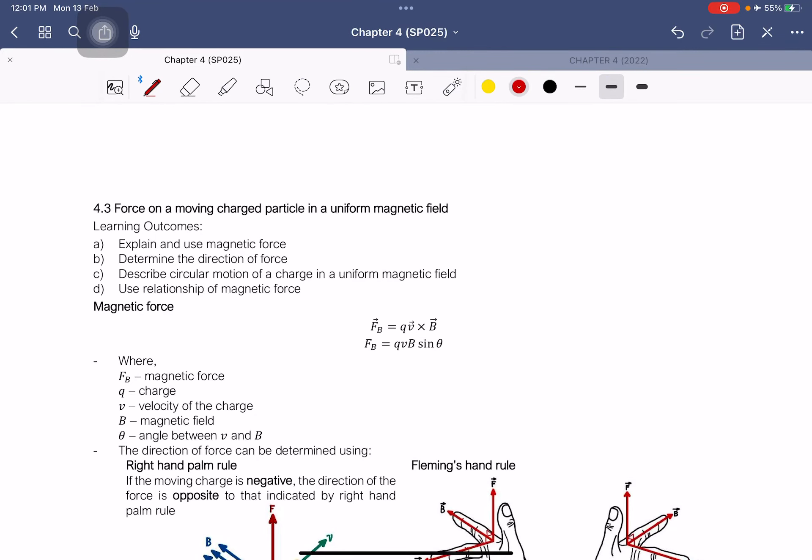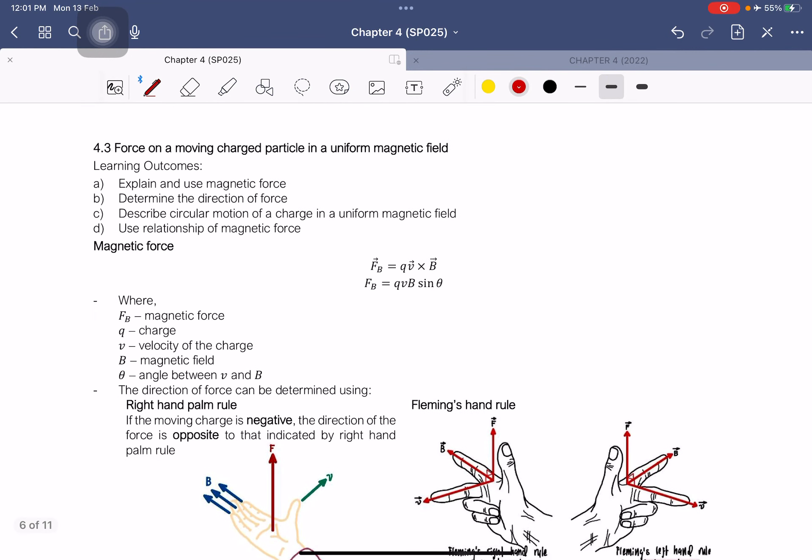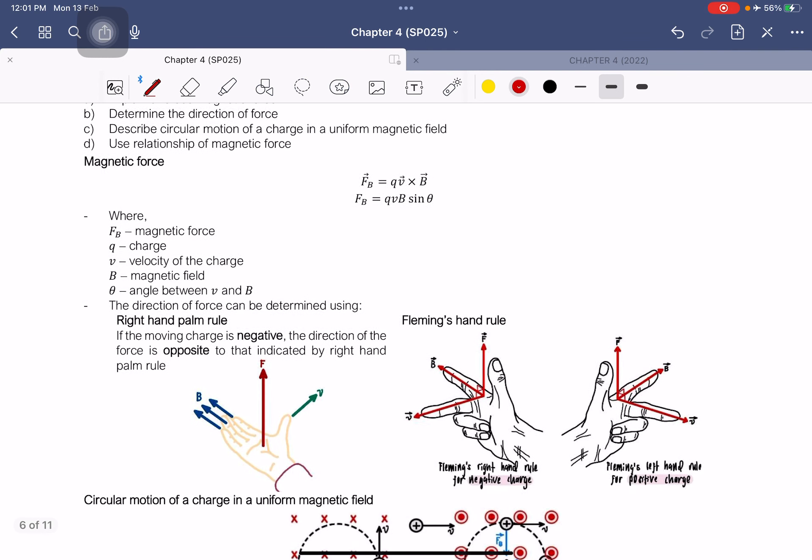Subtopic number 3 is on force on a moving charged particle in a uniform magnetic field. For this chapter, we have magnetic force. The magnetic force formula is F = QVB sin θ, where θ is the angle between velocity and magnetic field.